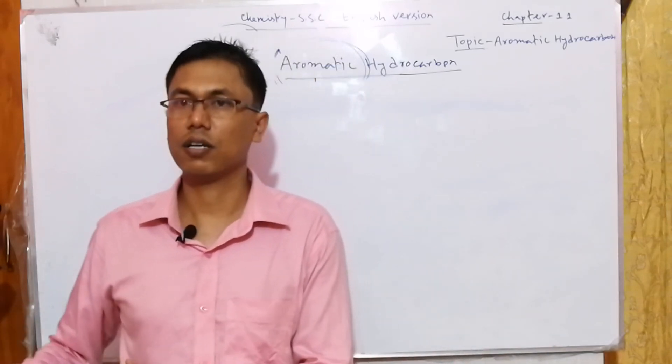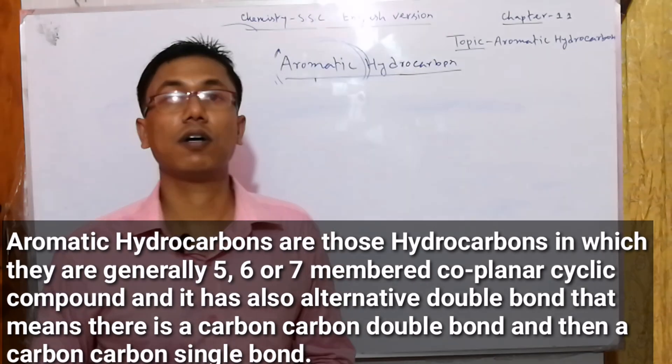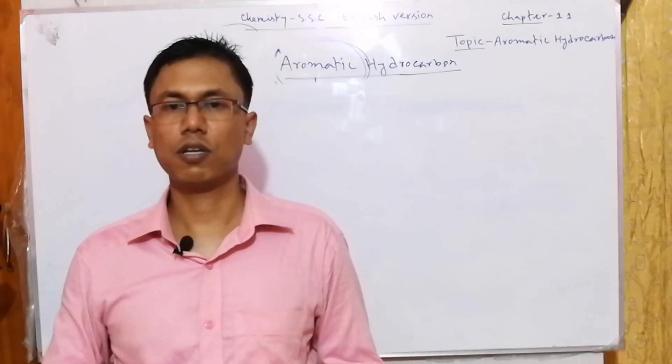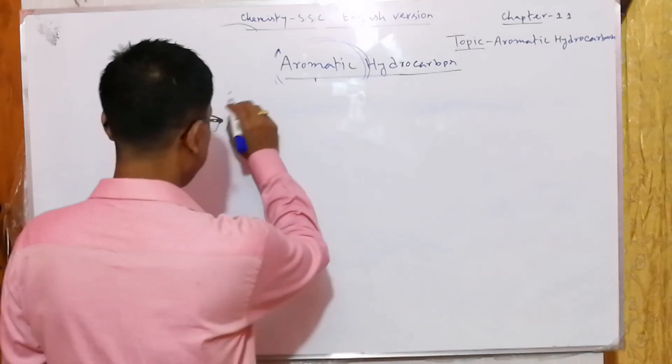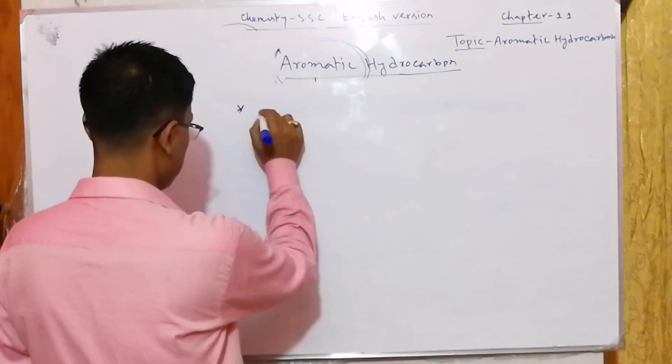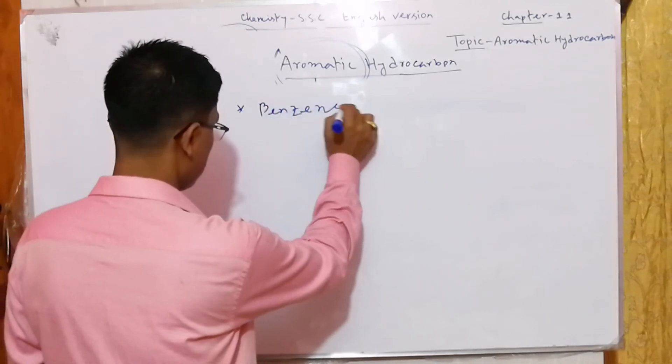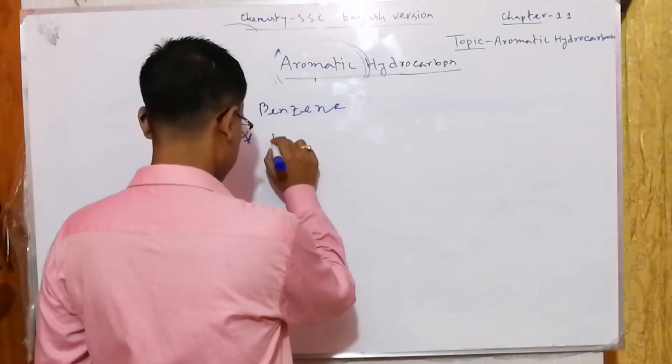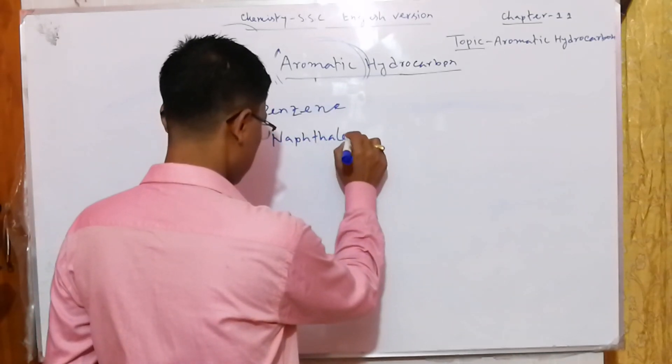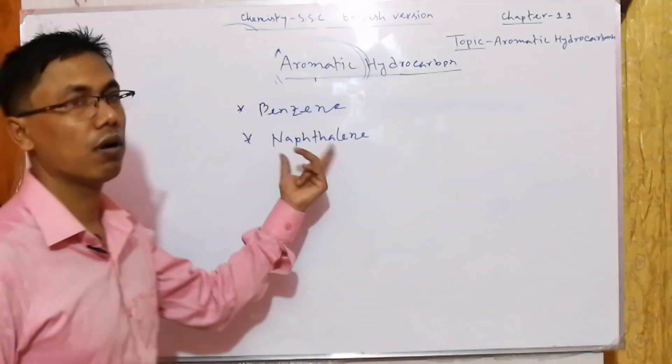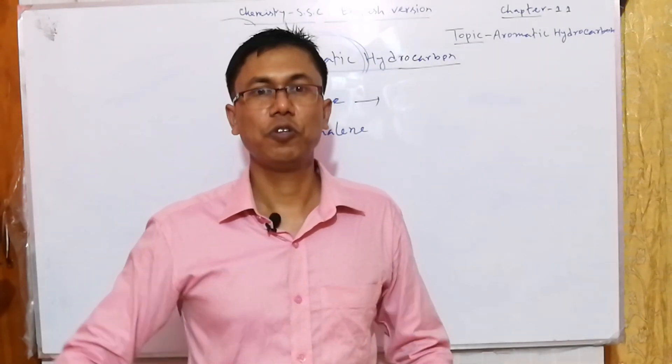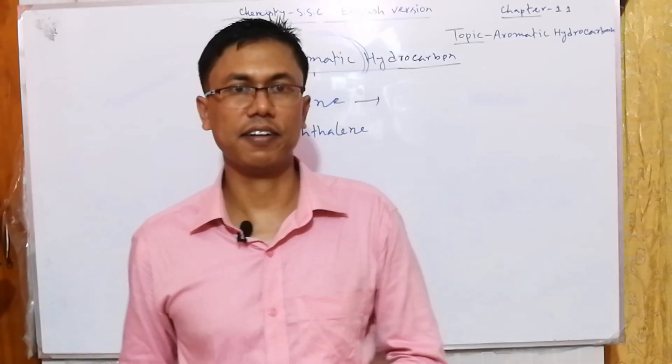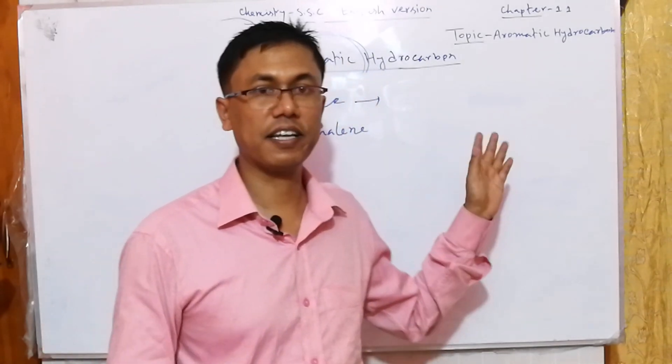That means there is a carbon-carbon double bond and then a carbon-carbon single bond. There are a lot of examples for aromatic hydrocarbons, but in the textbook, only two examples are given. I am showing them. Benzene is one example for aromatic hydrocarbons. The other is naphthalene, which is also an aromatic hydrocarbon. You have to remember one thing: apart from benzene, other aromatic hydrocarbons have benzene rings.